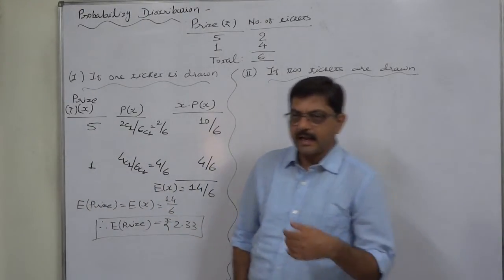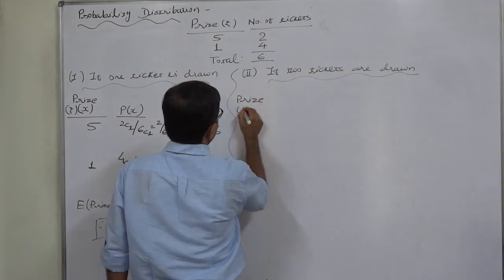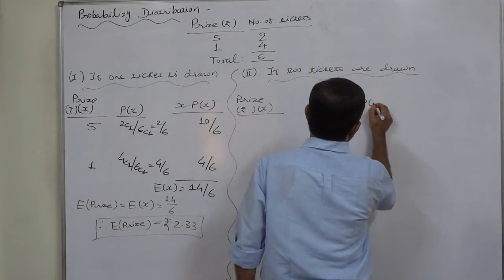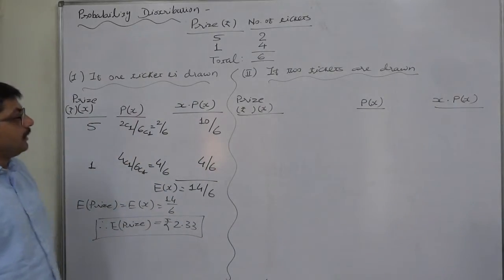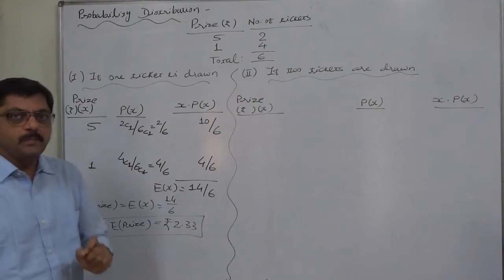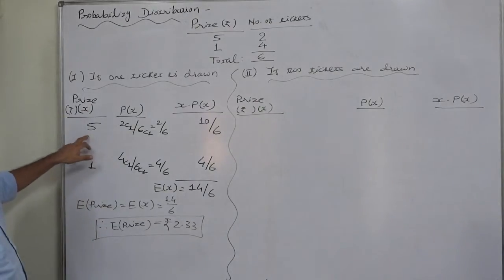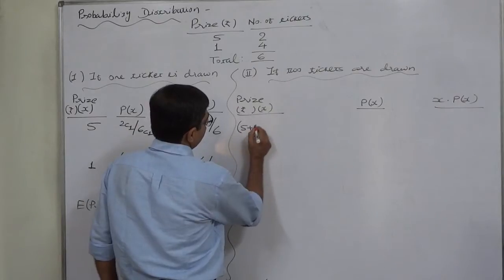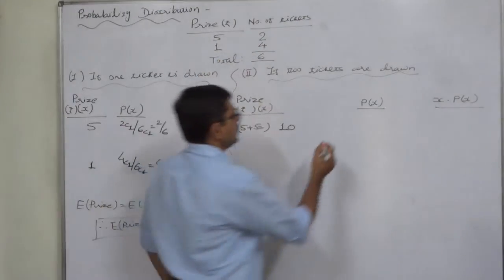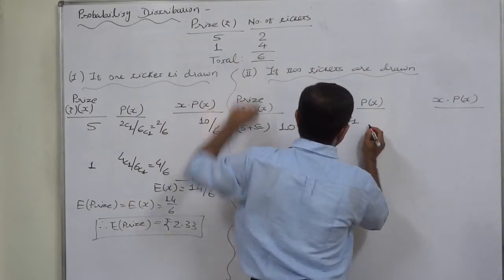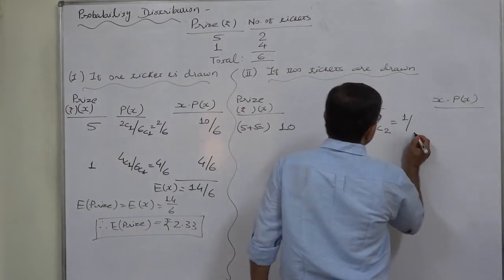Now for the case where two tickets are drawn, we set up the same columns: price, probability, and X into P(X) for the expected value. The total price is the sum of prize money on each ticket drawn. If both tickets of rupees five are drawn, the price is 5 plus 5 equals 10. The probability is 2C2 times 4C0 by 6C2, which gives 1 by 15.